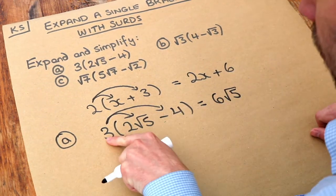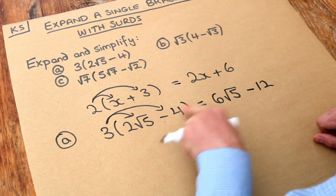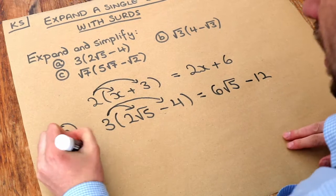And then we do the 3 times the minus 4. 3 times minus 4 is minus 12 because positive times negative is negative. What about the second one?